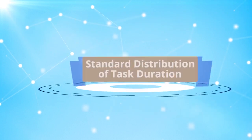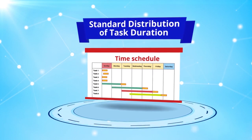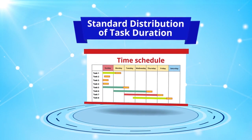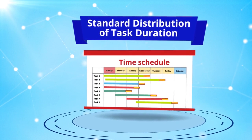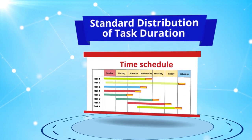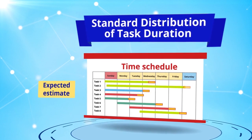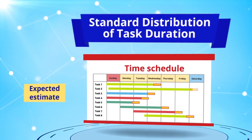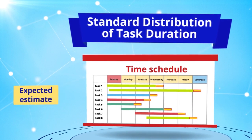The first concept is standard distribution of task duration. This standard distribution is determined using random variances in the actual completed task duration. You calculate the expected estimate for the task duration, then the variances, and figure out the standard distribution between the actual estimate and those variances.